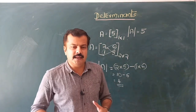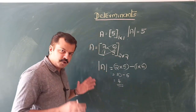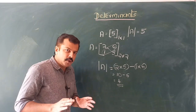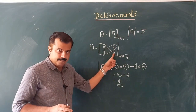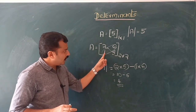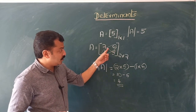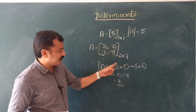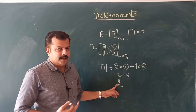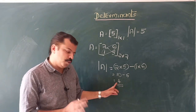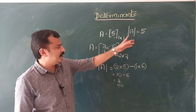We also call the determinant of a 2×2 matrix a second-order determinant. To compute it, we find the product of the diagonal elements minus the product of the off-diagonal elements: 2×5 minus 1×6 equals 10 minus 6 equals 4. For a 1×1 matrix, no calculation is needed — that number itself is the determinant.